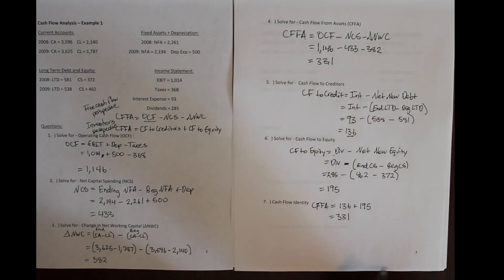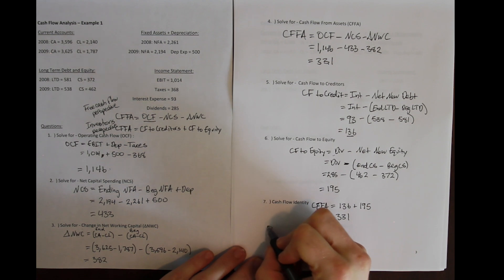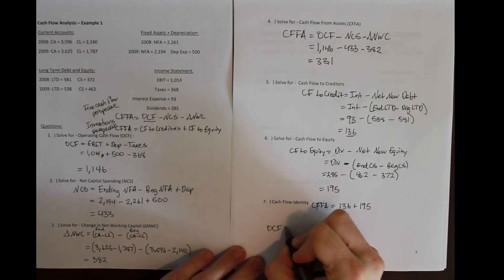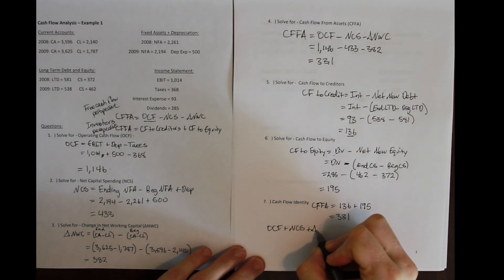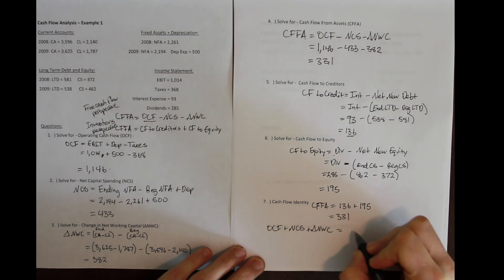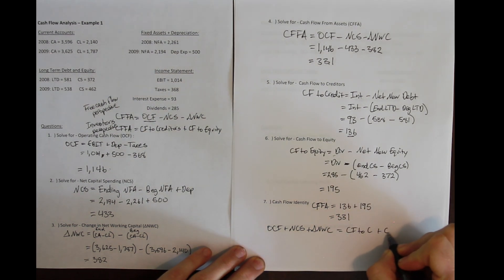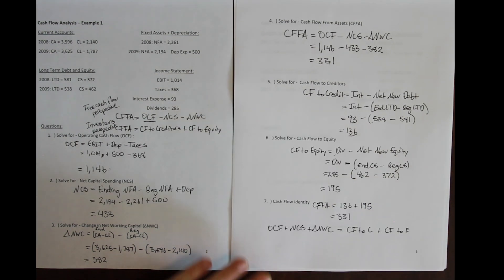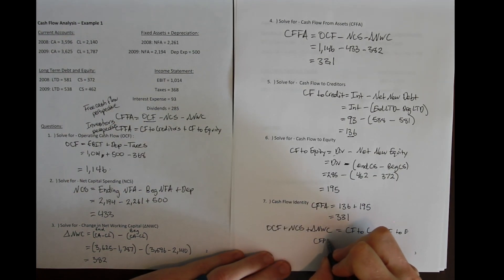The identity holds: operating cash flow minus net capital spending minus the change in net working capital equals cash flow to creditors plus cash flow to equity holders. Both sides equal 331, confirming that cash flow from assets is consistent — value is neither created nor destroyed in the accounting sense.